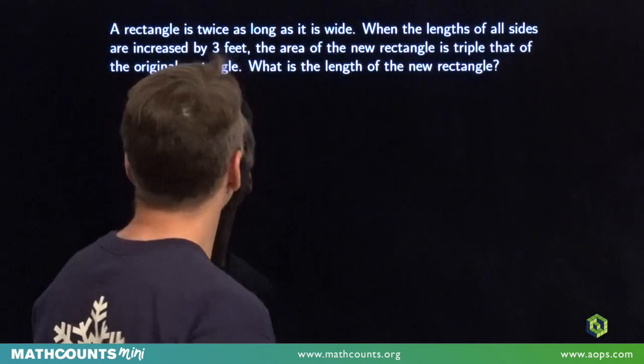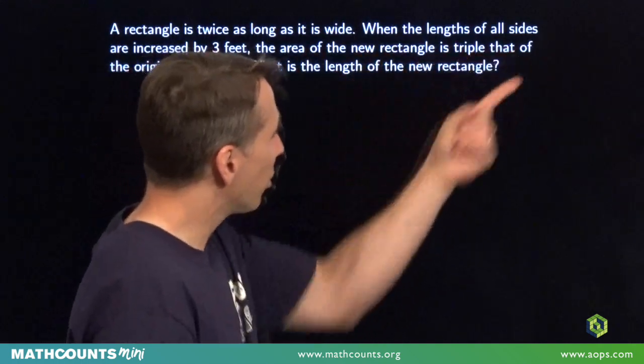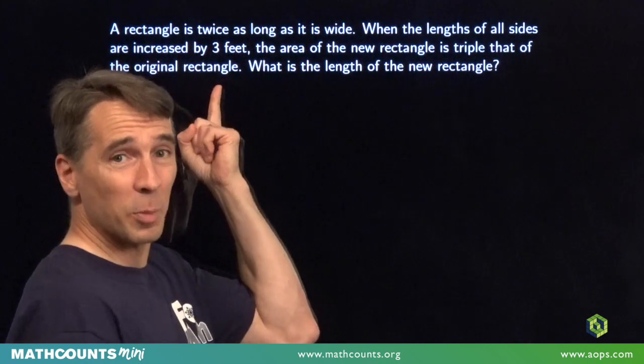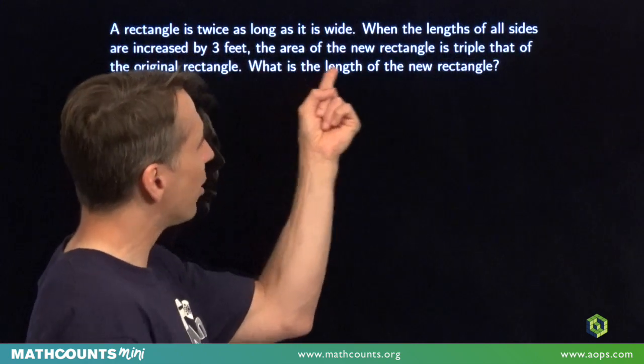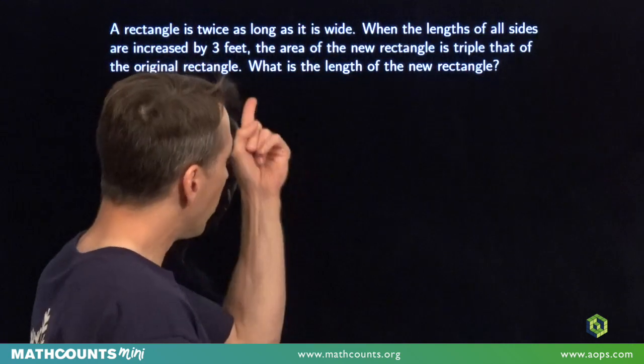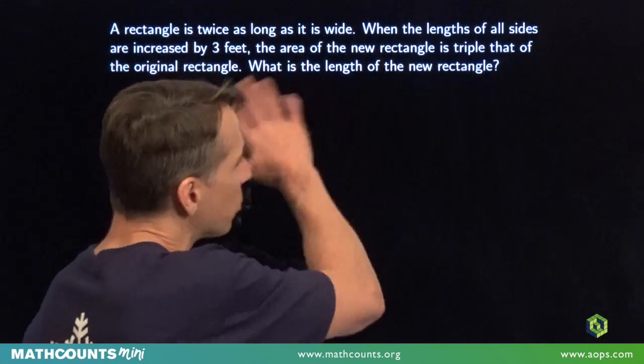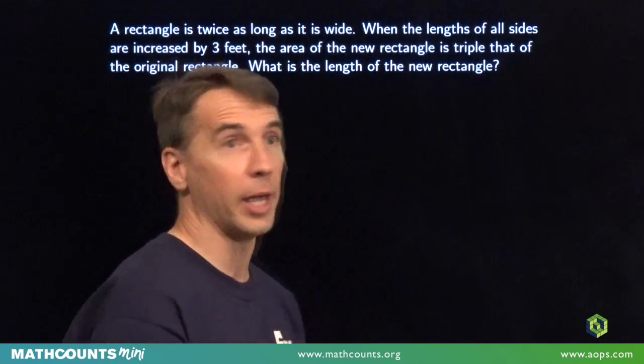All right, we have a word problem here. A rectangle is twice as long as it is wide. When the lengths of all sides are increased by three feet, the area of the new rectangle is triple that of the original rectangle. We have to find the length of the new rectangle. Now, all these words describe a picture. Let's draw that picture.